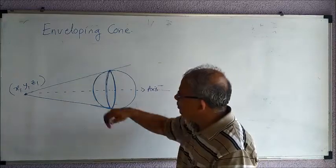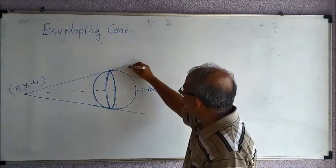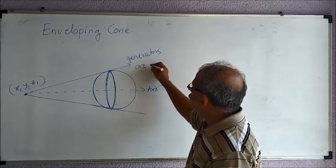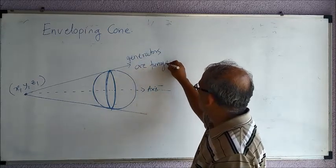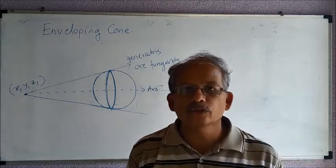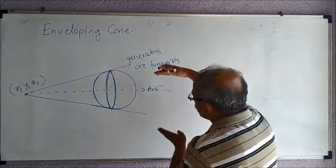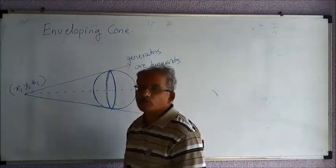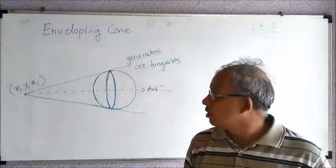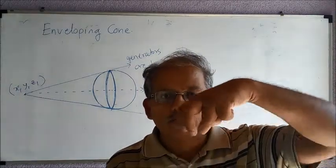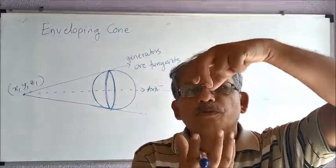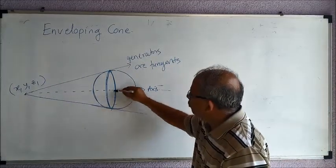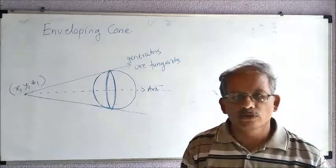The generators of the cone are tangents to the sphere, and these generators are meeting at a point which becomes the vertex of the cone. So you can visualize this — it is a cone which contains a sphere at its base, giving a circular base, making it a right circular cone.